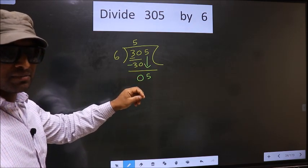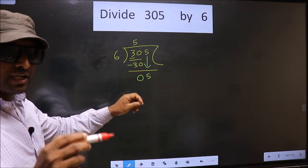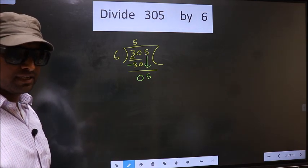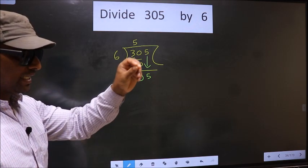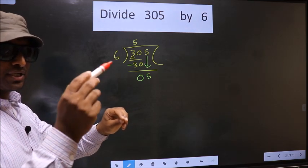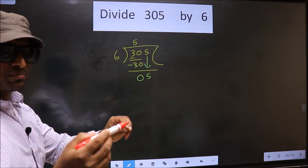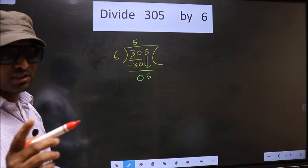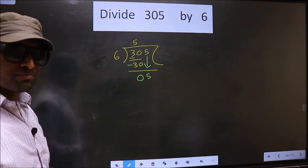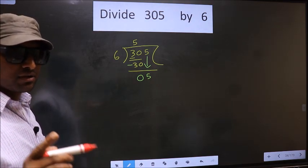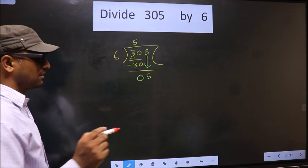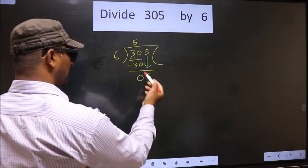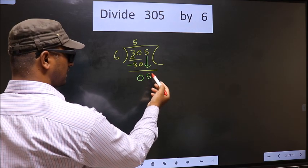Just now you brought the number down, and in that same step you want to put a decimal and take a 0 — you are not supposed to do both in the same step. Instead, think: what number should we write in the quotient? If we write 6, that is larger than 5.